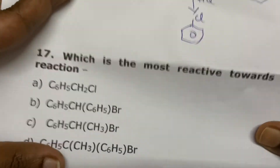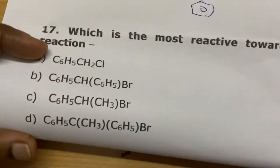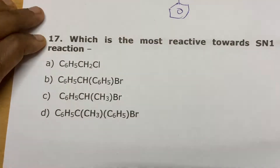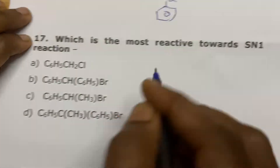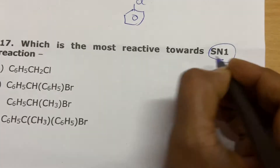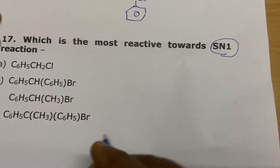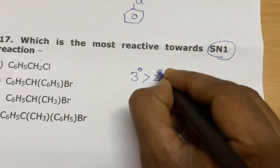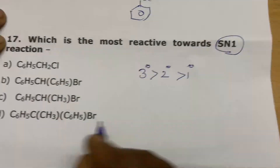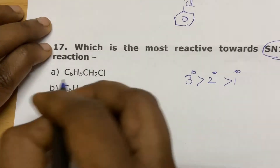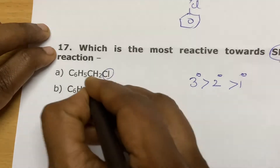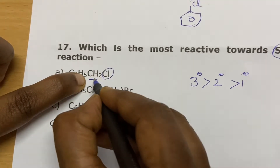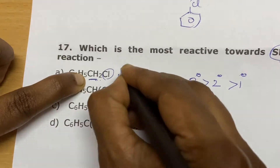Which is the most reactive towards SN1 mechanism? They have given a set of alkyl halides. In SN1 mechanism, the order is tertiary first, then secondary, then primary. So first label the type of carbon. Chlorine is attached to a carbon that has two hydrogens, so it is primary.